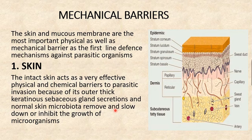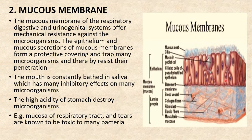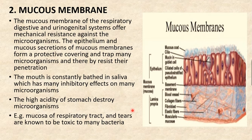The second mechanical barrier is the mucous membrane. The mucous membranes of the respiratory, digestive, and urinary-genital systems offer mechanical resistance against microorganisms. The epithelium and mucous secretions of the mucous membrane form a protective covering and trap many microorganisms, thereby resisting their penetration. The mouth is constantly bathed in saliva with inhibitory effects on microorganisms, and the high acidity of the stomach destroys microorganisms. Mucus of the respiratory tract and tears are also toxic to many bacteria.